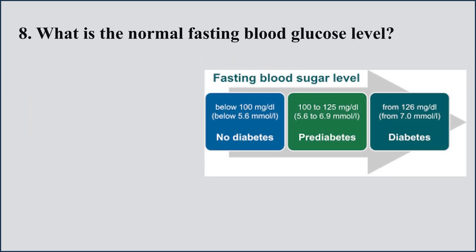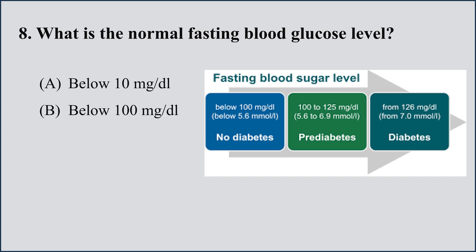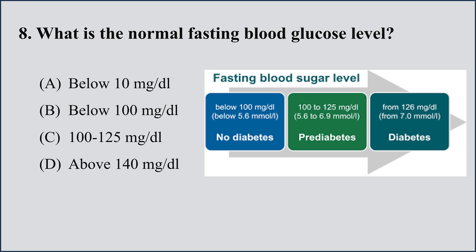A very important and common question: what is the normal fasting blood glucose level? Options: A) below 10 mg/dL, B) below 100 mg/dL, C) 100–125 mg/dL, D) above 140 mg/dL. The right option is B, below 100 mg/dL, but it must not be below 60 mg/dL — below 60 mg/dL would be hypoglycemia. Normal fasting blood glucose is 80–100 mg/dL.